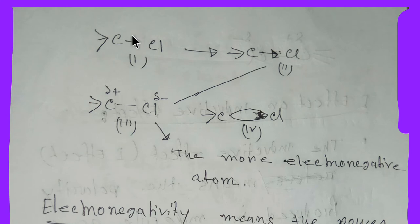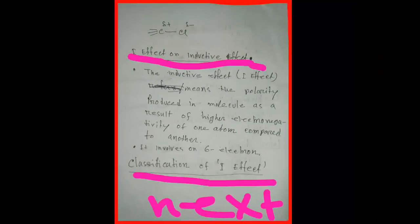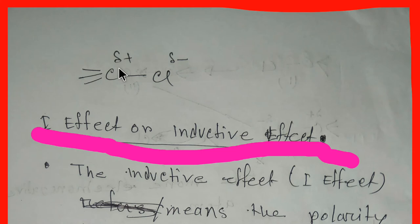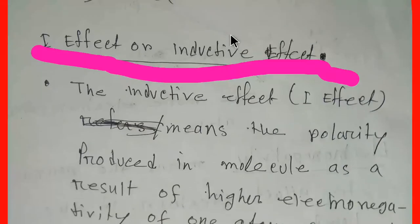A polar bond is formed due to the difference in electronegativity. Remember, inductive effect involves the electrons of only sigma bonds. A sigma bond is formed from head-to-head overlap of p-p orbitals or s-s orbitals. A bond is one type of force. So in this picture, carbon is partially positive and chlorine is partially negative.